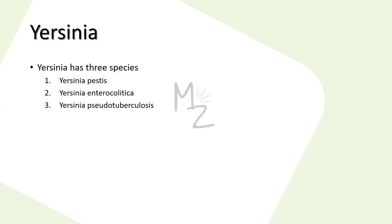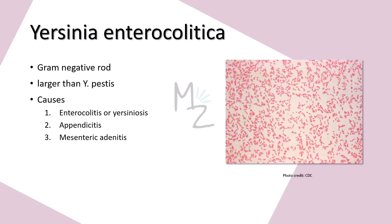Yersinia has three species: Yersinia pestis, Yersinia enterocolitica, and Yersinia pseudotuberculosis. First, let's talk about Yersinia enterocolitica. It is a gram-negative rod which is oval in shape and is larger than Yersinia pestis. It is responsible for causing enterocolitis or Yersiniosis, also appendicitis and mesenteric adenitis. This is how it looks under the microscope — pink colored because it's gram-negative and rod-shaped.